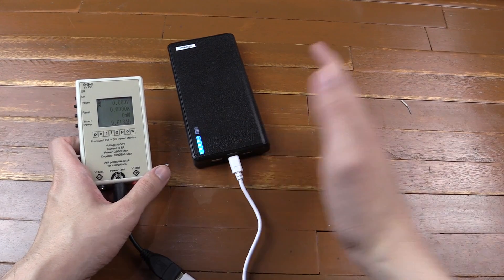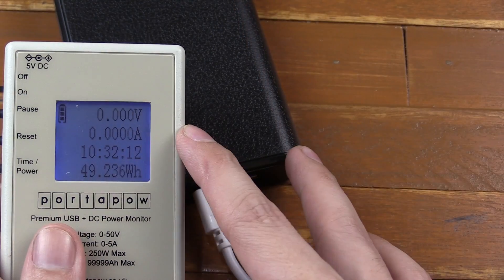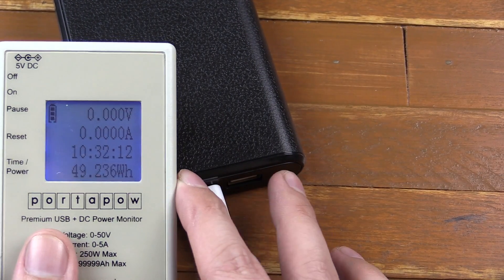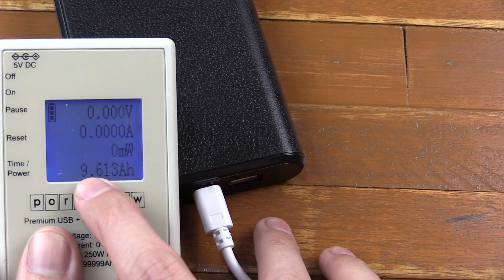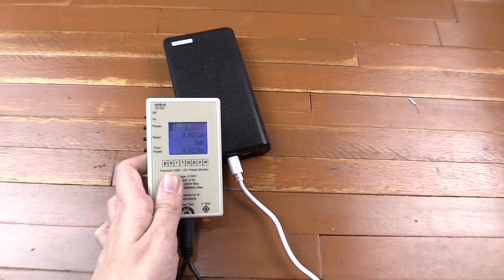So it's finished charging now, and it took quite a while. Let me zoom in on the power meter and show you. You can see that we've got 49.2 watt-hours, or in milliamp-hour, 9,613. So that's a very long way off 30,000 milliamp-hour.